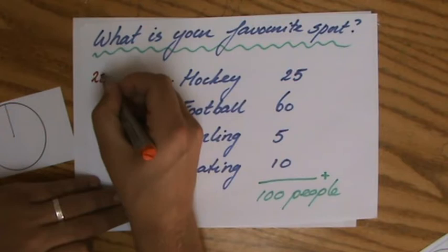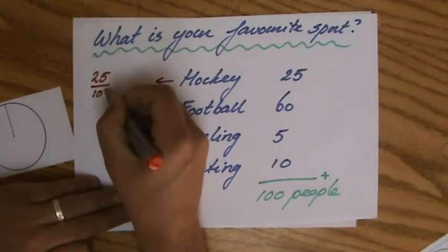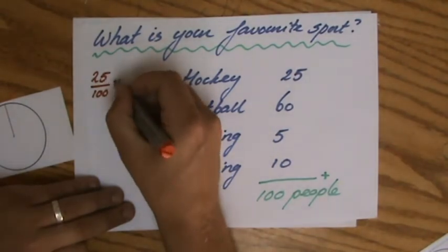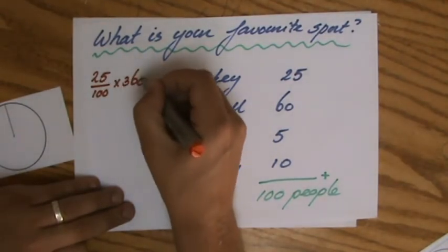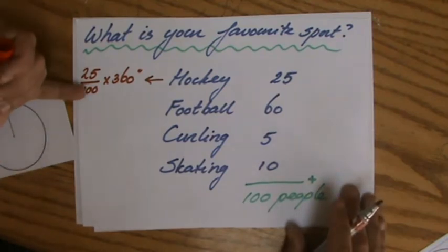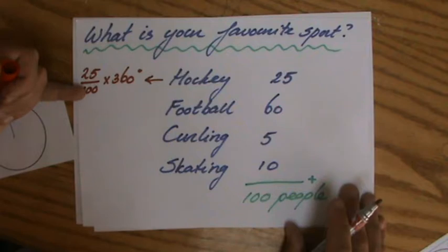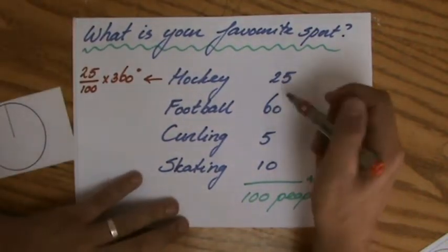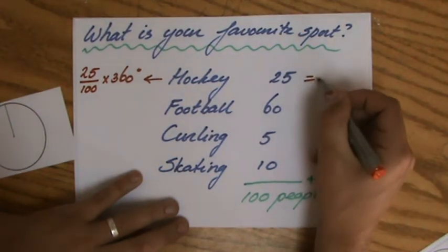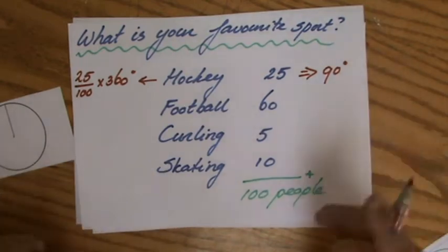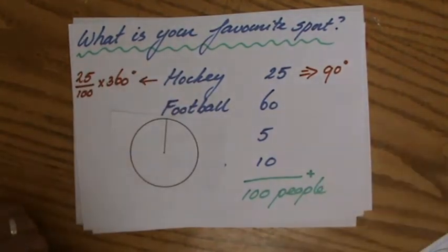Twenty-five out of 100 people like hockey, and I will times that by 360 degrees. Because 25 out of 100 is a quarter, a quarter of the people like hockey and therefore it gets a quarter of 360 degrees, and that is 90 degrees.